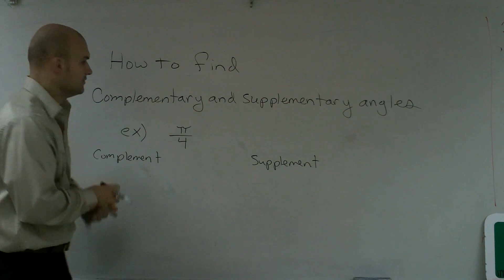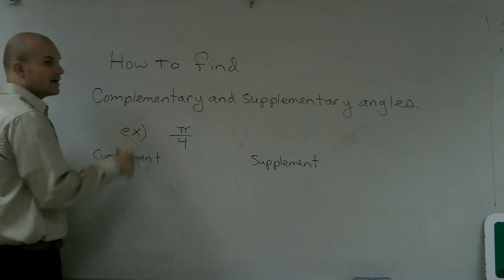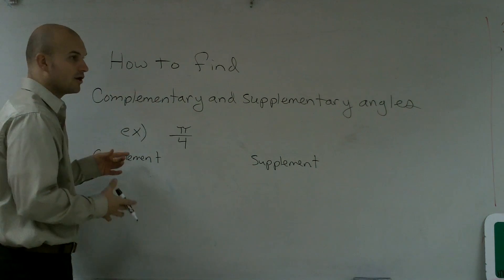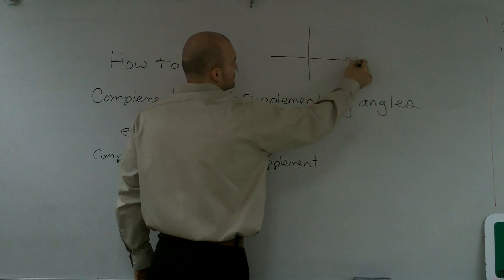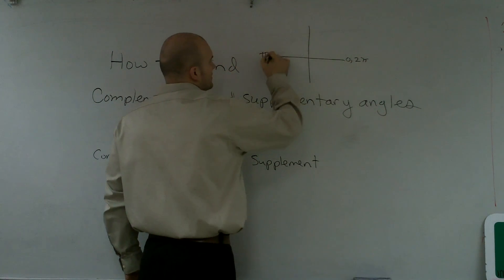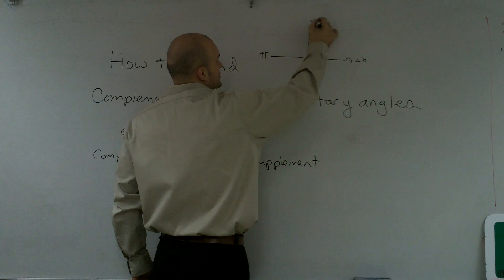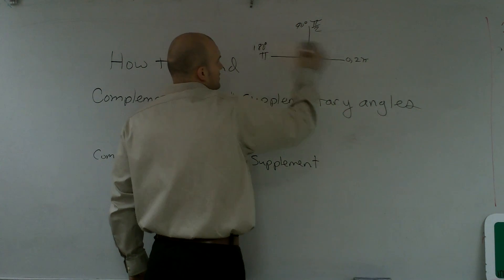A quick little review. Remember, complementary angles are two angles that add to 90 degrees, or if I say this is 0 to π, this is π, half that is π over 2, which is also 90 degrees. And that's 180 degrees. We know that's 360.